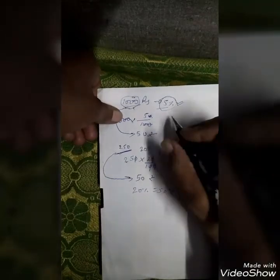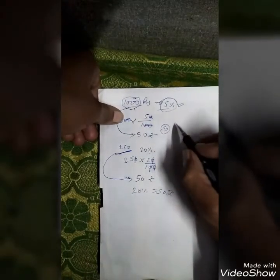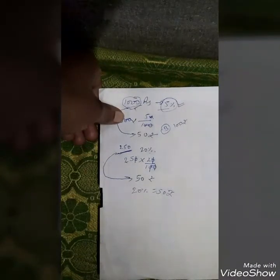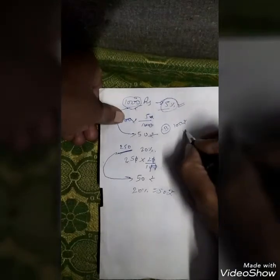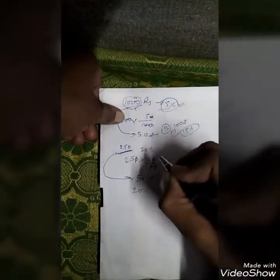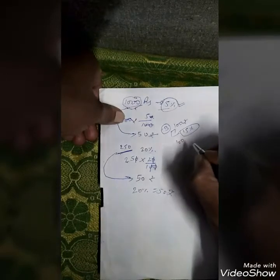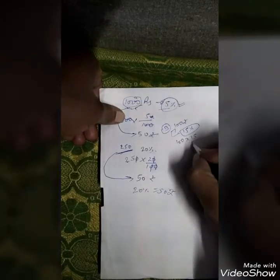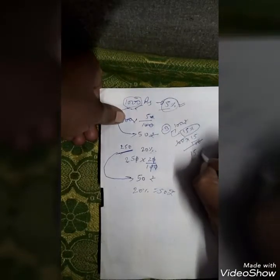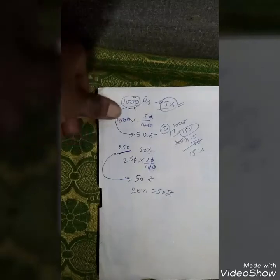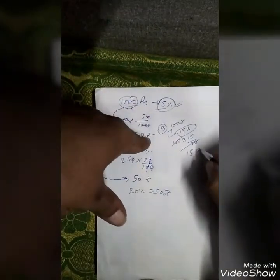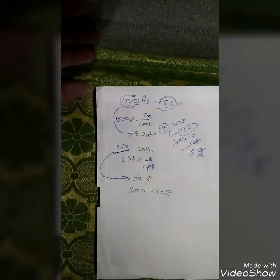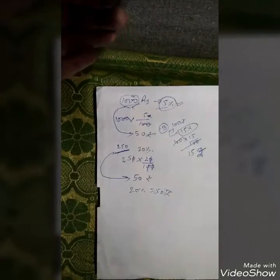Chalo, ek aur question dekhte hain. Third question — lete hain easy sa 100 rupees. 100 rupees ka hameih 15 percent nikalna hai. 15 percent kitna hota hai? 100 into 15 percent — toh 15, or percent hataati, niche hundred baata hai. Yaani 100 rupees ka jo 15 percent nikalna tha woh 15 rupiah aaya. Aaj hameih percentage nikalna sikha hai.